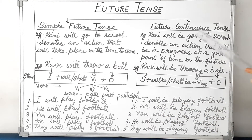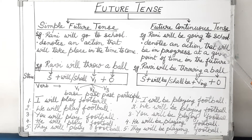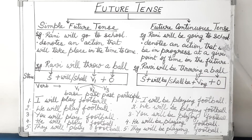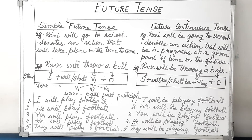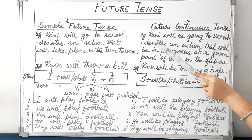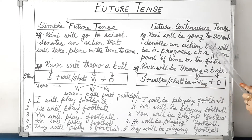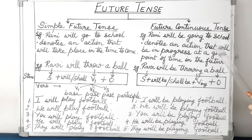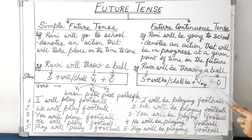Now let's move to future continuous tense. We will see this again with the help of an example: Rani will be going to school. Whenever you see continuous, we add -ing — this you have to remember. When it is future, we use will be. Future continuous tense denotes an action that will be in progress at a given point of time in the future.